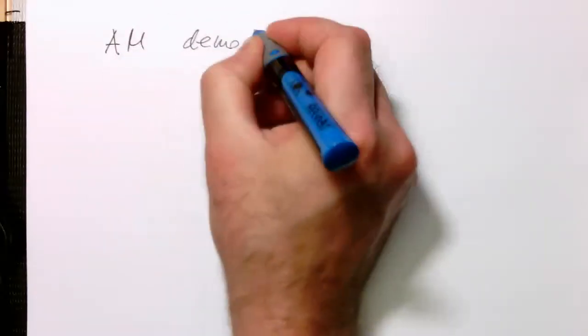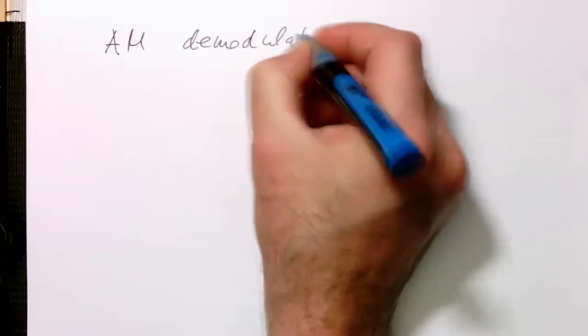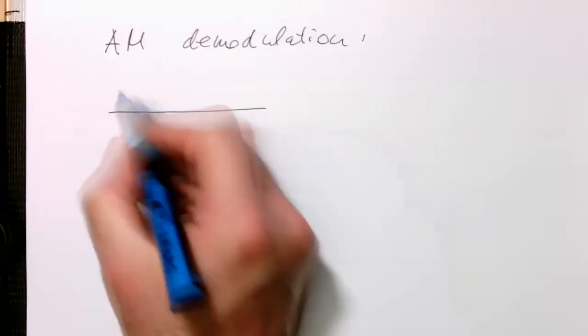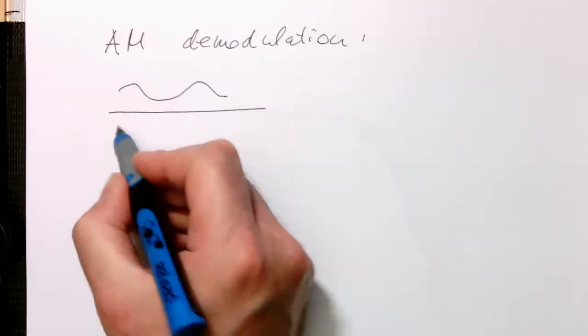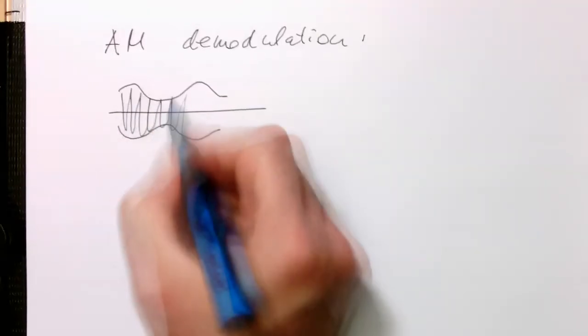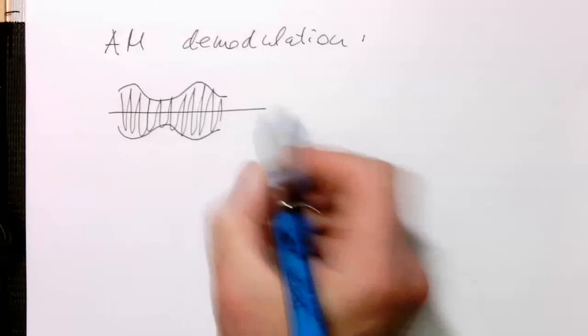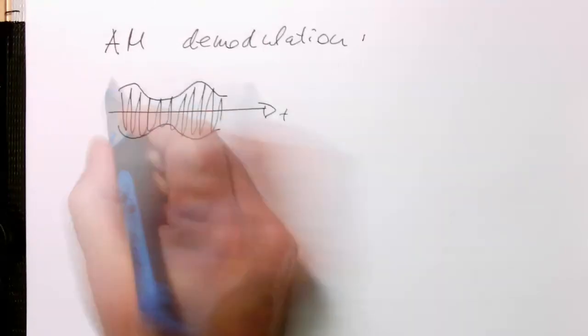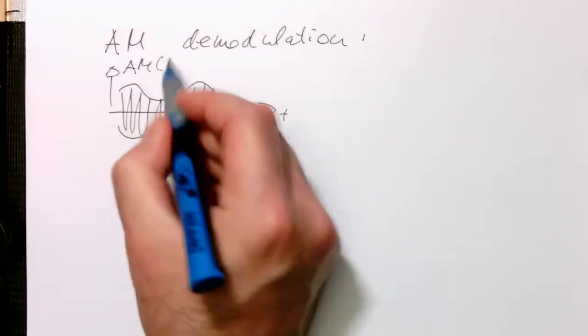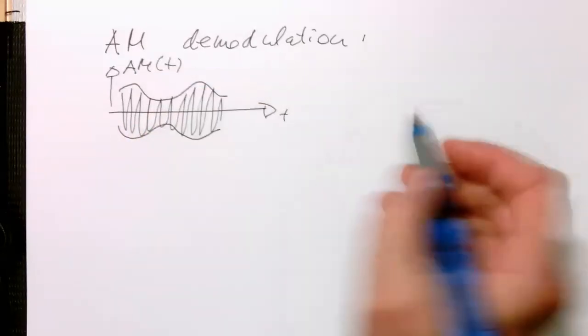We had also another asynchronous demodulation before. And this was AM demodulation. Amplitude modulation. Remember, we are transmitting our sine wave just by changing the amplitude of this carrier here. So time, and that's our AM signal.